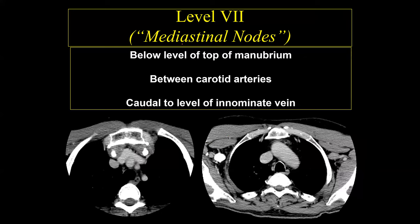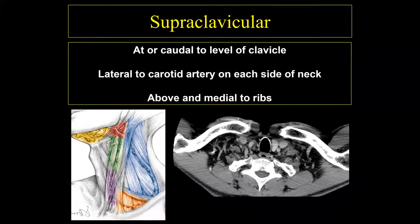Level 7 lymph nodes are the mediastinal lymph nodes, running from the top of the manubrium between the carotid arteries down to the innominate vein. Although these are technically mediastinal lymph nodes, because imaging studies extend into the upper mediastinum, they are included in the classification for cervical lymph nodes.